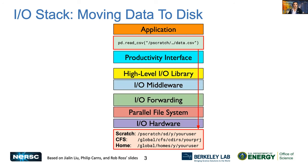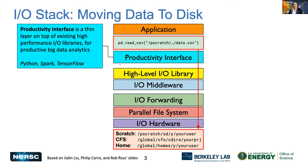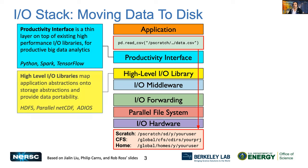We go from a productive interface like Python, Spark, or TensorFlow, which provides a layer of abstraction on top of the files and data models that we use. We can then move into higher-level IO libraries like H5Py or NetCDF/HDF, and these provide abstraction and data portability across systems.